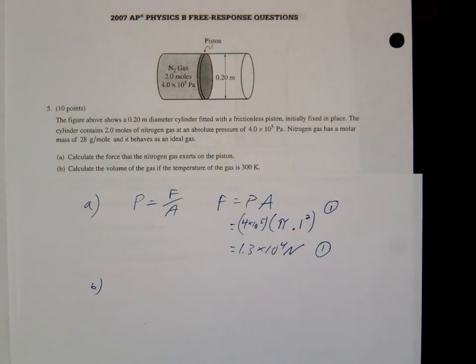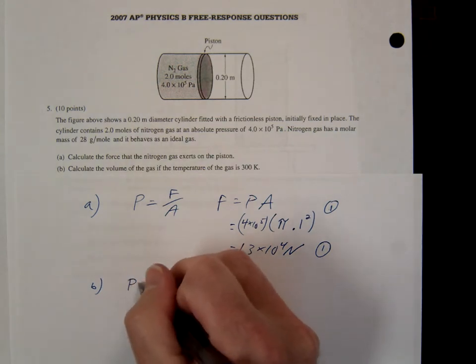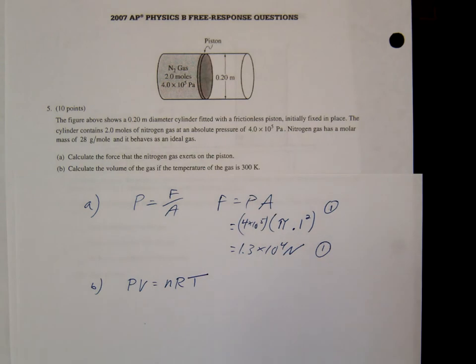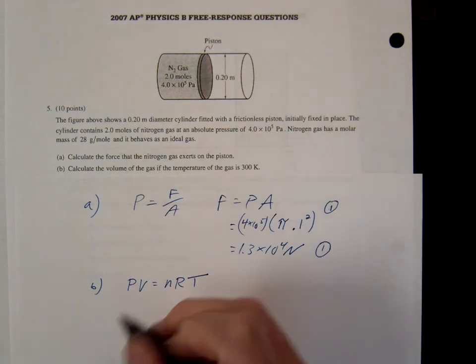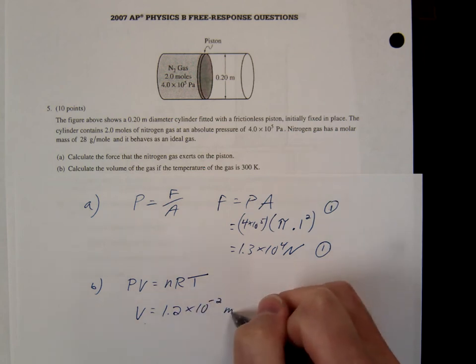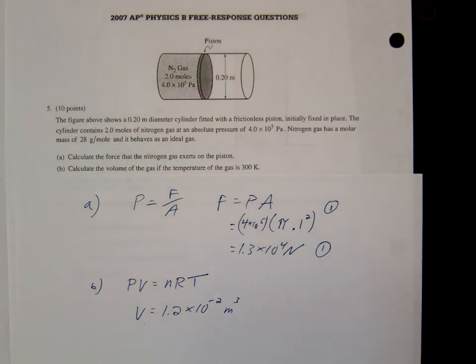Alright, letter B. Calculate the volume of the gas if the temperature is 300. So this one we're simply going to be using PV equals nRT. Good. Make the substitution, solve for the volume. I don't feel like I need to do that. You're going to get V equals 1.2 times ten to the negative two meter cubed.